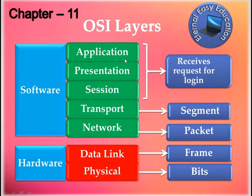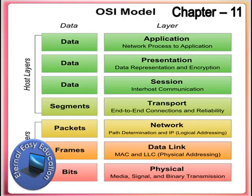The Application, Presentation, and Session layers together form a single stage where the system receives a request, such as a login request. This is the gist of the OSI layers — if you know this, you can easily answer a five-mark question. The network process comes from the first layer, which is the bottom layer of connectivity.